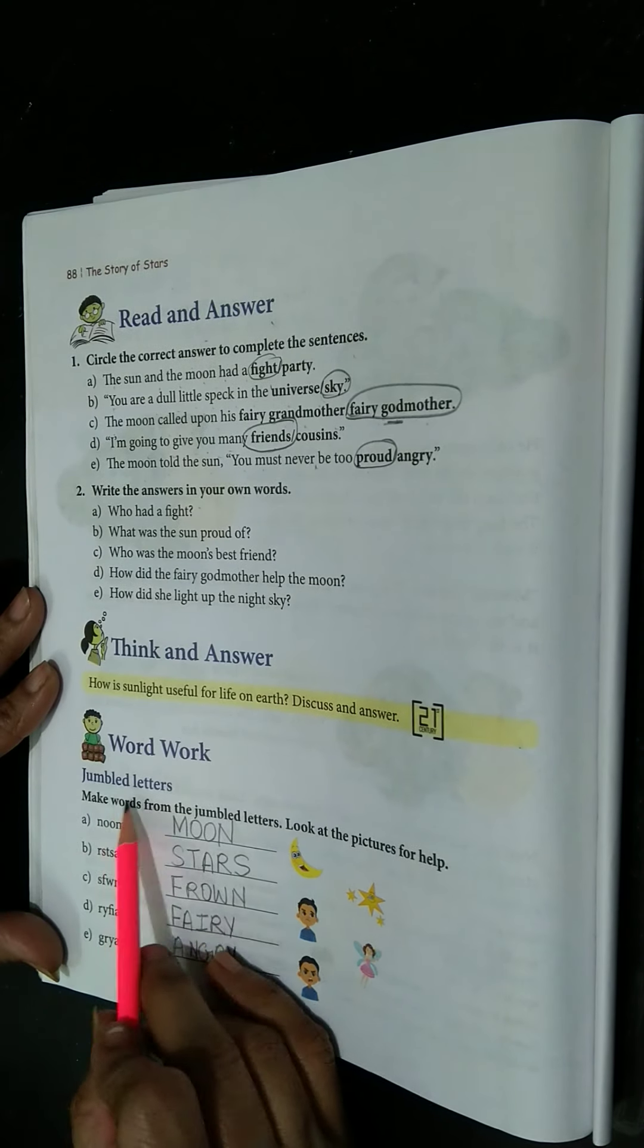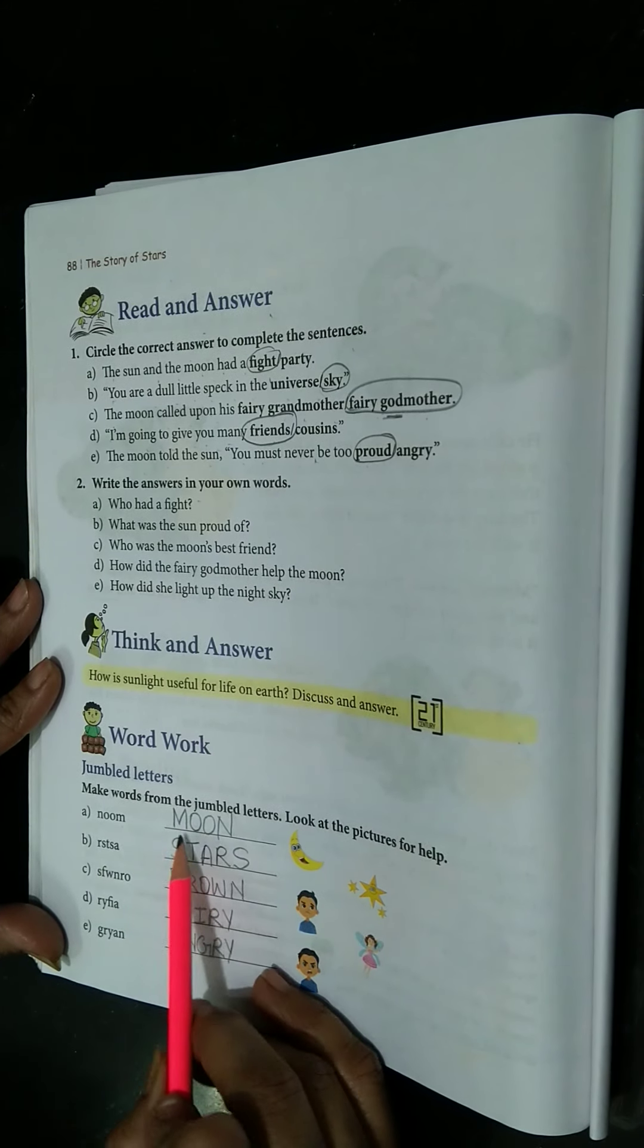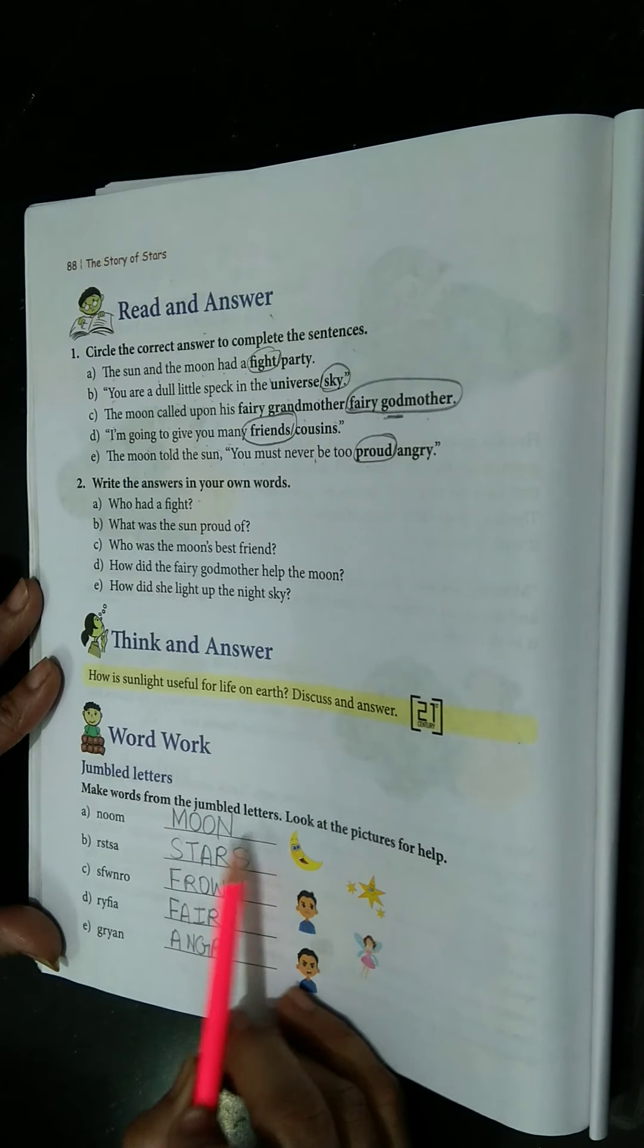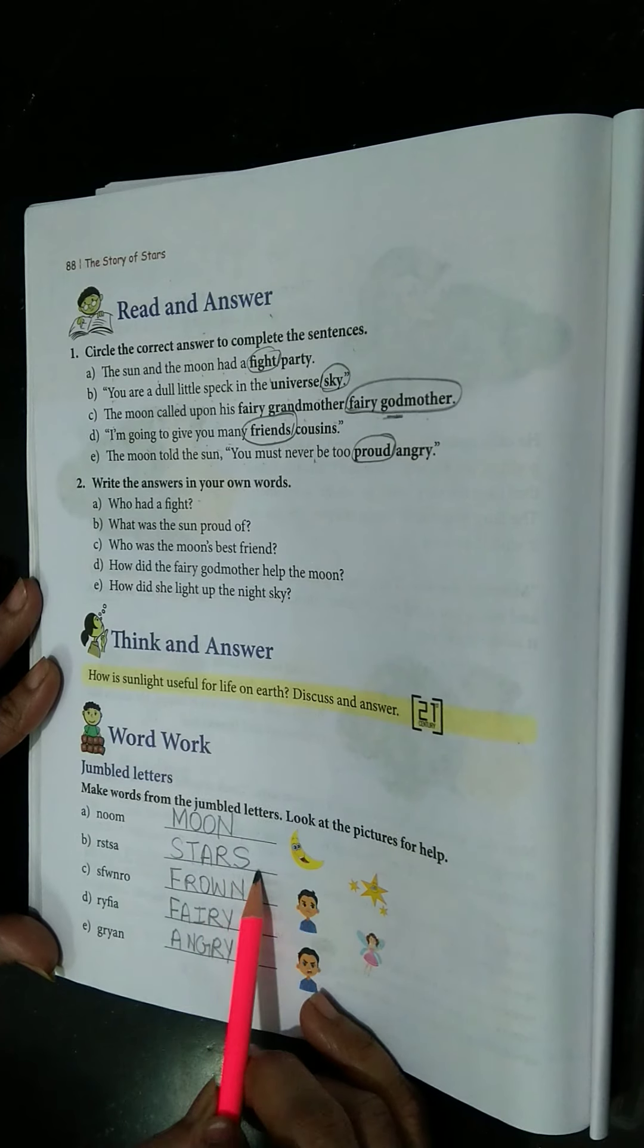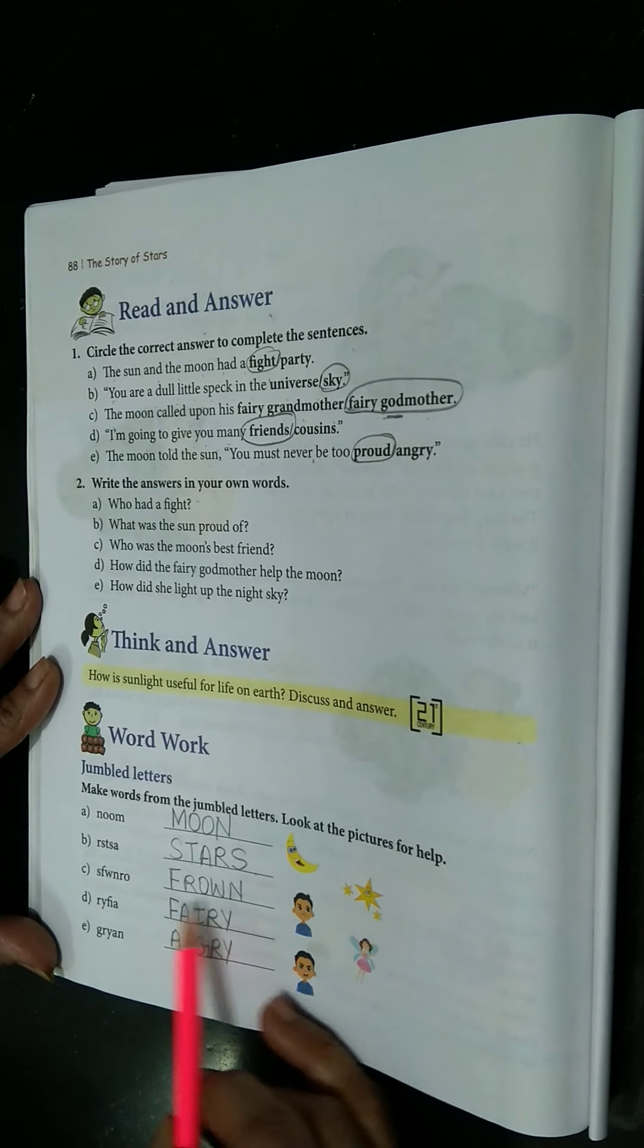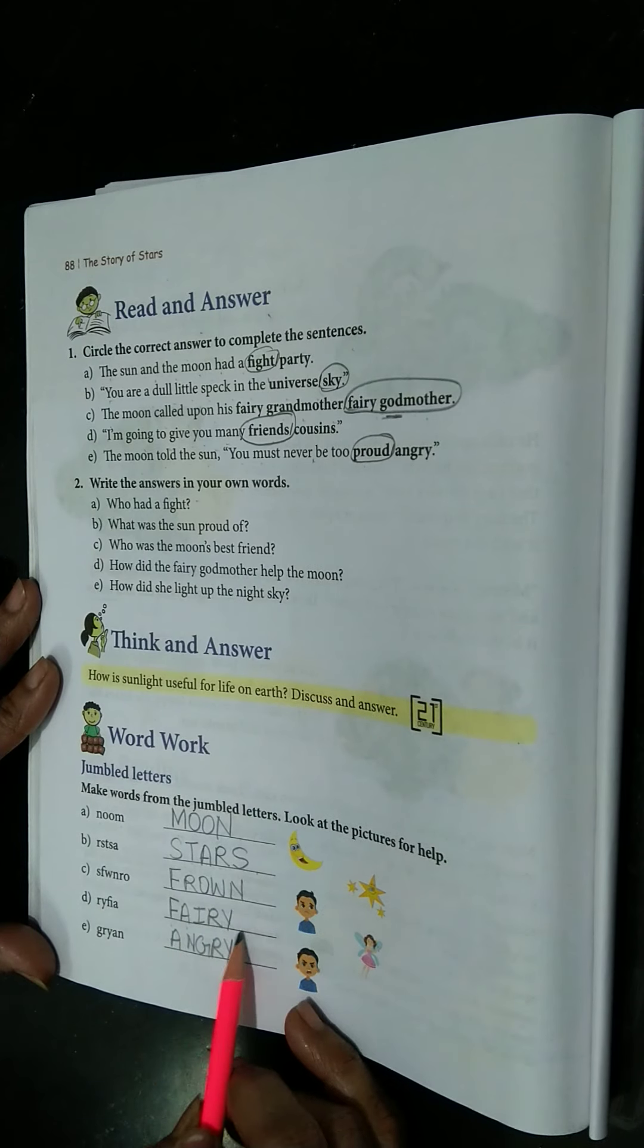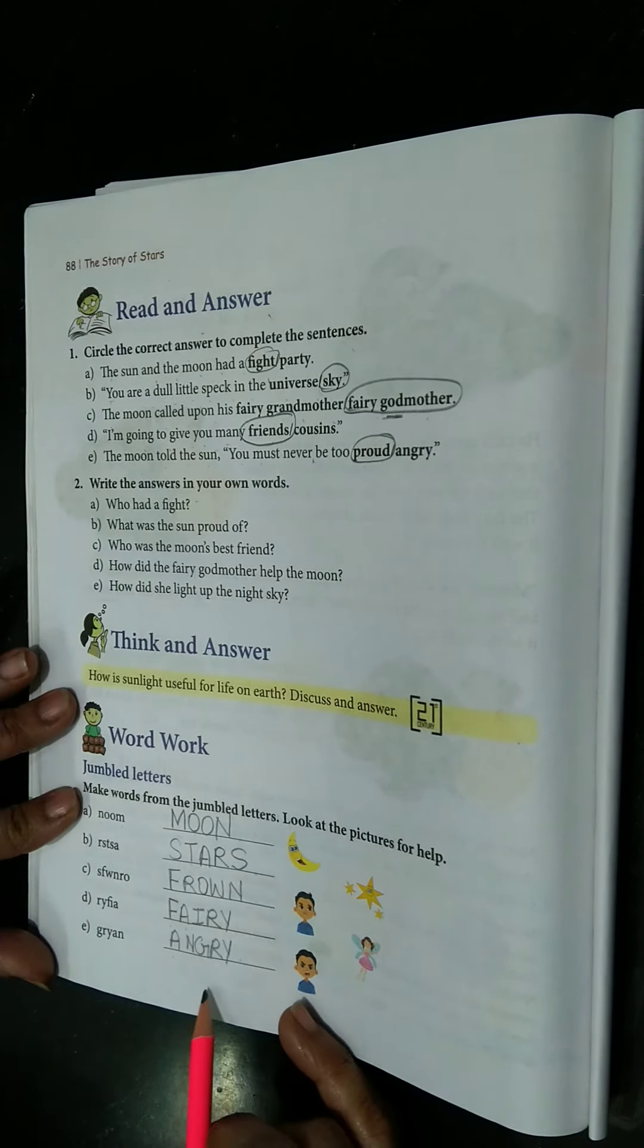Now we are going to do the jumbled letters. It's N-O-O-M, so it relates, it is moon. M-O-O-N, moon. Then S-T-A-R-S, stars. F-R-O-W-N, frown. Fairy, F-A-I-R-Y, fairy. Angry, A-N-G-R-Y, angry.